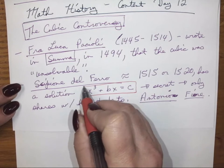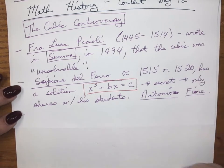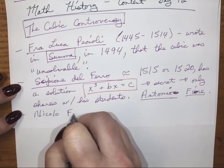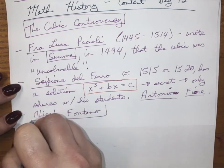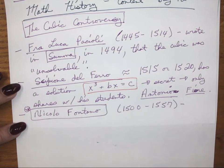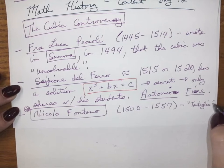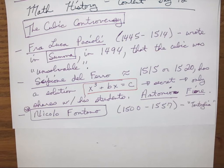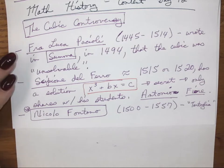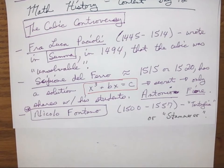Along comes one of our main central characters: his name is Nicolo Fontano — F-O-N-T-A-N-O — his dates are 1500 to 1557. We call him Tartaglia — T-A-R-T-A-G-L-I-A — and Tartaglia literally means 'the stammerer.' That's the name this guy was given as a kid.